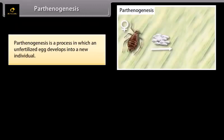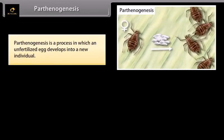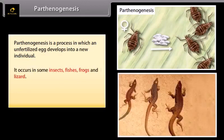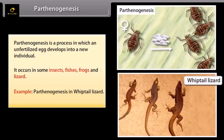Parthenogenesis is a process in which an unfertilized egg develops into a new individual. It occurs in some insects, fishes, frogs, and lizards. An example is parthenogenesis in the Whiptail lizard.